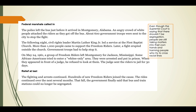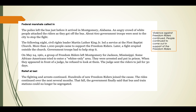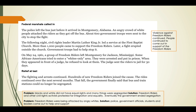The section 'Relief at Last': the fighting and arrests continued, and hundreds of new freedom riders joined. The rides continued over the next several months. That fall, the government finally said that bus and train stations could no longer be segregated. Having read all this, I'm starting to notice this has a problem-solution text structure. One of the main problems is that Blacks and whites did not have equal rights and many things were segregated. One of the main solutions was that freedom riders and other civil rights activists protested for integration and equality, and eventually the government ended segregation.